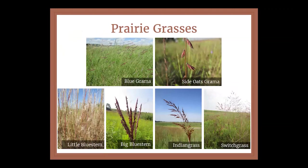Let's look at some of the diversity of native prairie grasses typically found in the tall grass prairie in Illinois. Even though it's called the tall grass prairie, there is a huge range of growth patterns. We have really short ones that only grow about a foot tall, like blue grama in the top left corner. We have mid-height species like side oats grama grass and little bluestem. And then probably the ones most people are familiar with are big bluestem, Indian grass, and switchgrass — the three main dominant prairie grass types found throughout the state.